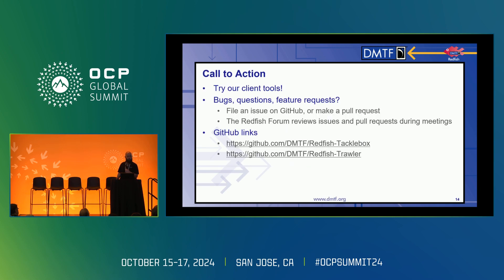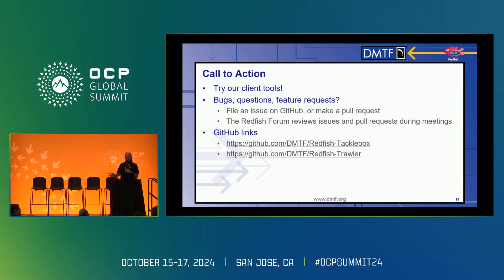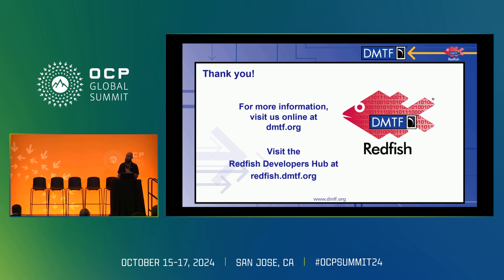Our call to action: try out these tools — they're public. If you have bugs, questions, or feature requests, file an issue or better yet make a pull request. We review these weekly, give feedback, and make approvals. Links are all on GitHub under the DMTF organizational page — you'll find Redfish Tacklebox and Redfish Trawler there. Thank you.